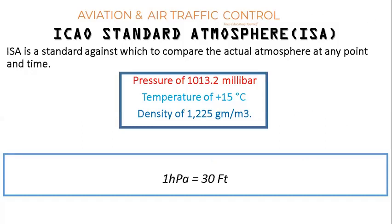Atmospheric conditions vary from one place to another and can cause weather variations, turbulence, and other situations that affect the conduct of a flight. Therefore, in the aeronautical sector, an average standard of the ideal atmospheric conditions for air operations has been established. This is called International Standard Atmosphere, or ISA.